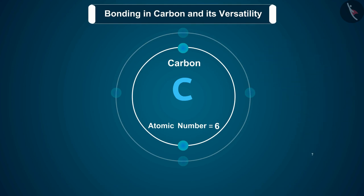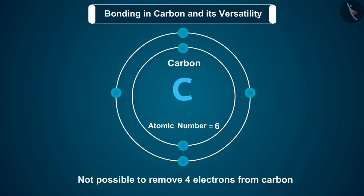As carbon is a small atom, the outermost electrons are held strongly by the nucleus of the atom, so it is not possible to remove four electrons from carbon. Also, it is not possible to gain these many electrons due to energy considerations. Let's assume if it were to gain or lose electrons.